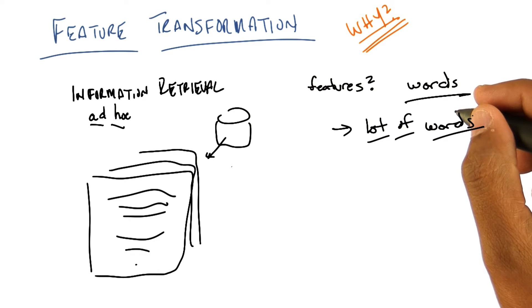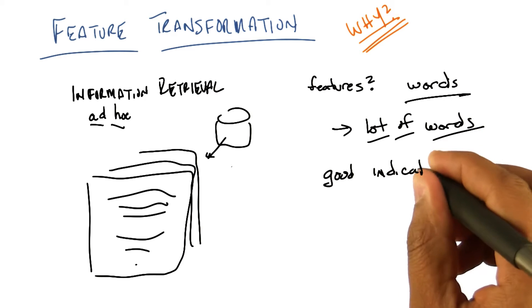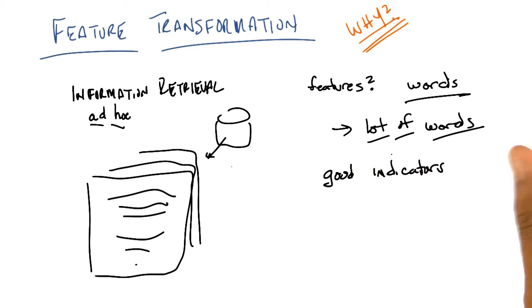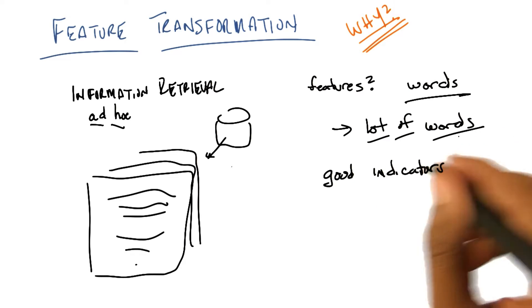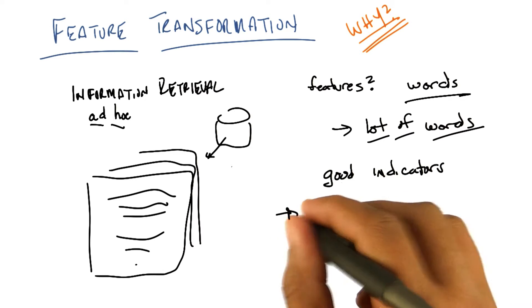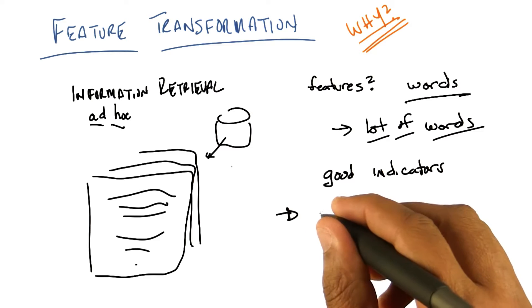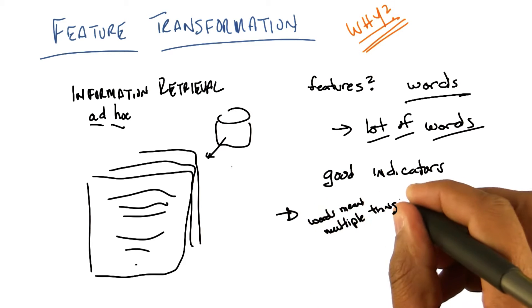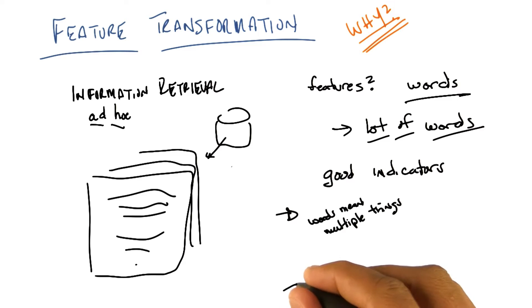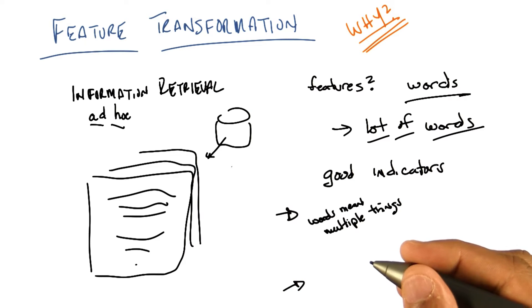I would think that they'd be pretty good indicators of meaning except, I guess there's kind of two complementary problems. One is that some words mean more than one thing. I like that. So we have words are good indicators of meaning, because they're words. But you could be in the case where you have words mean multiple things. You said there were two problems. What's the second one? Sort of the opposite, which is you can say the same thing using completely different words.